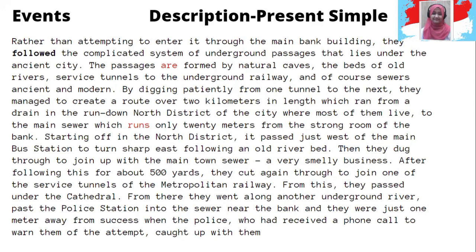Biasanya berupa description. We have some present simple tense verbs in this text showing description — for example, 'the passages are formed' — ini present simple berupa kalimat pasif, to be + verb 3. Kemudian di teks berikutnya ada juga 'which runs only 20 meters from the strong room of the bank' — nah ini juga mendeskripsikan tempatnya, deskripsinya sama seperti sekarang. Oleh karena itu, 'the Menchua which runs only 20 meters from the strong room' — seperti itu.